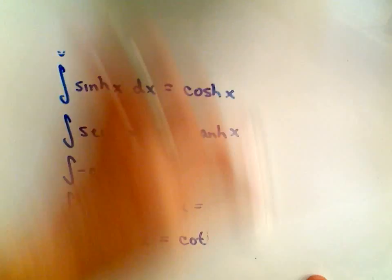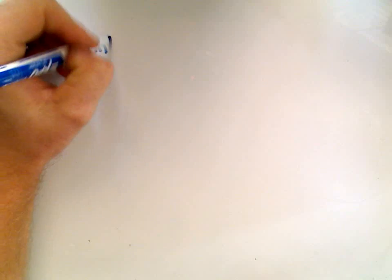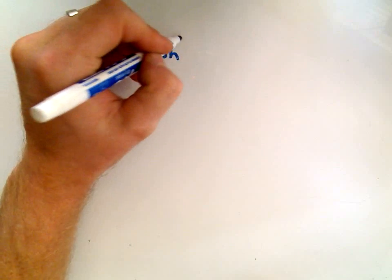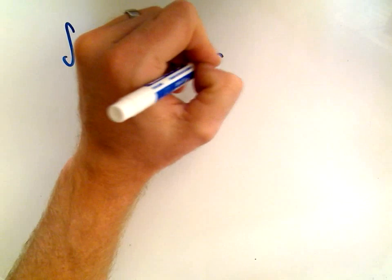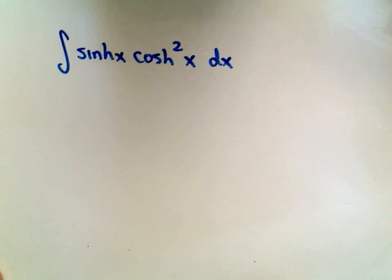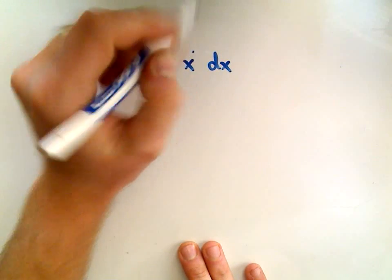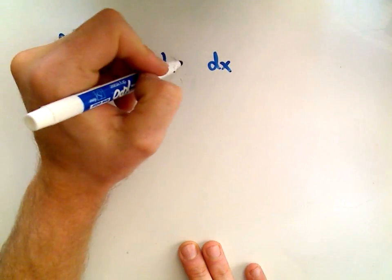Alright, so let's do a few examples here. Suppose we want to integrate hyperbolic sine times hyperbolic cosine squared of x with respect to x. So in this case, the notation I like to use when it's squared, I like to pull the square outside.